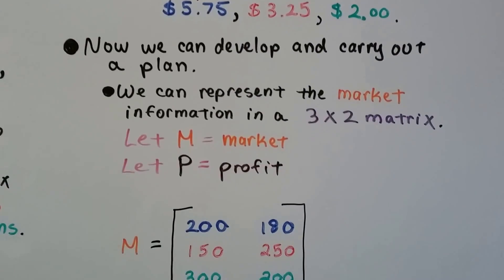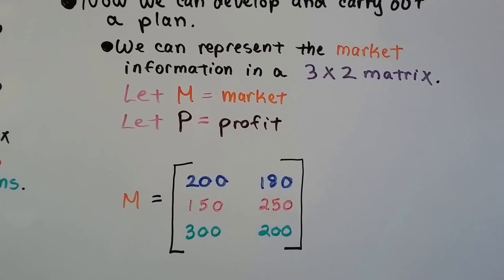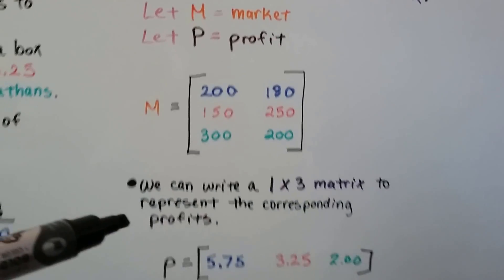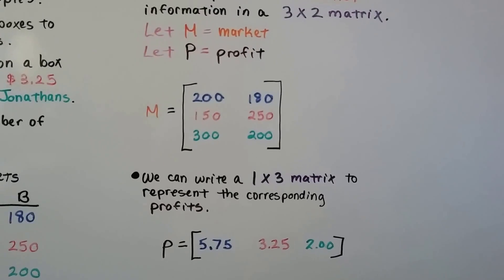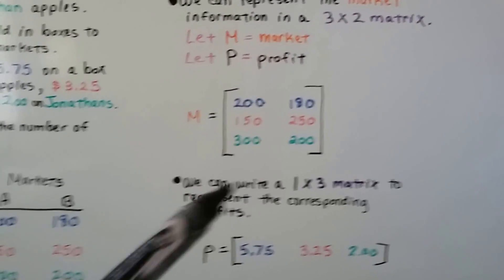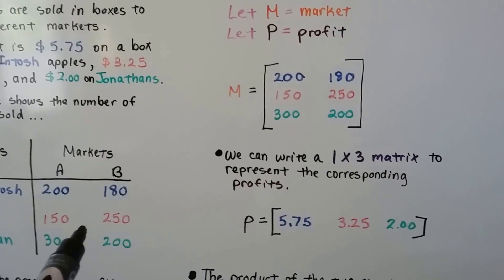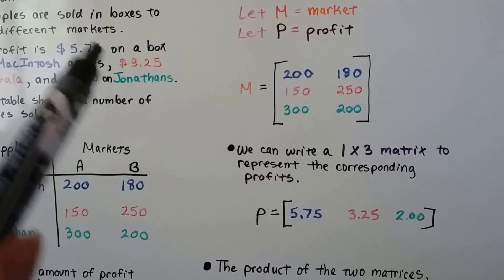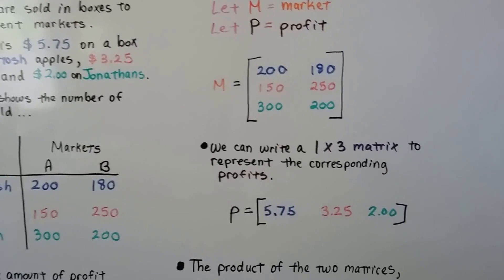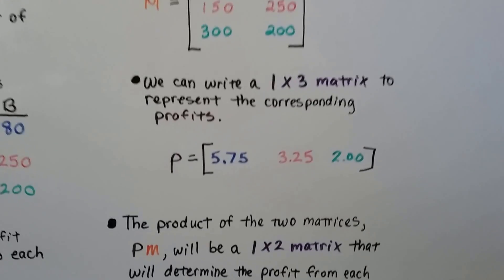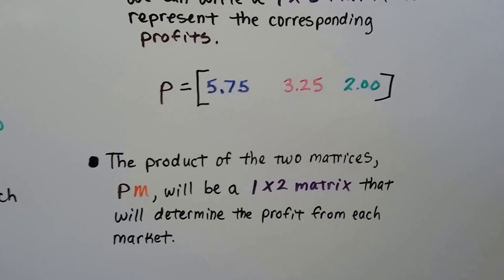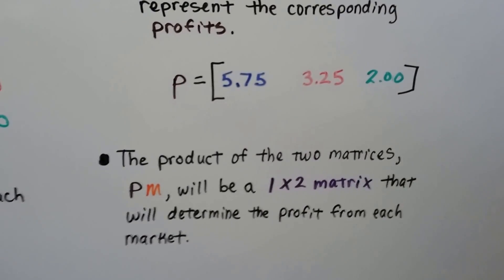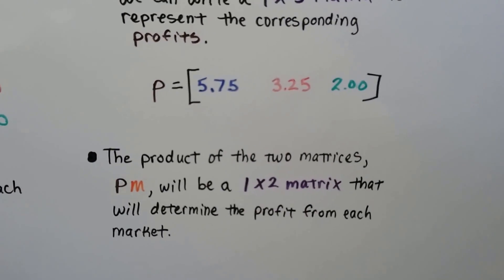We can represent the market information in a 3 by 2 matrix. We're going to let M equal market, and we're going to let P equal profit. So here's the market information from the table, and here's the profit information that we know they get for each box. The product of the two matrices, P times M, will be a 1 by 2 matrix that will determine the profit from each market, A and B.